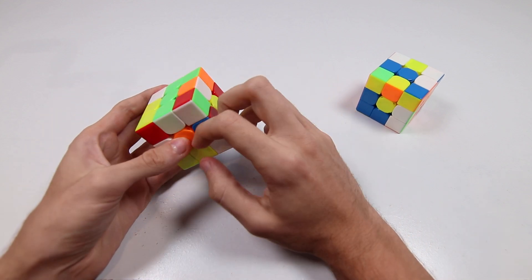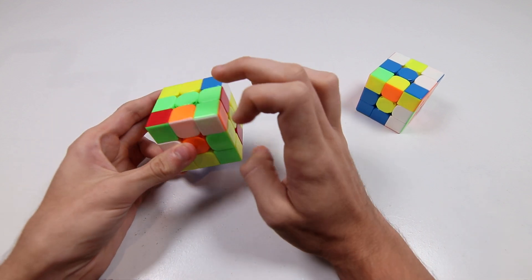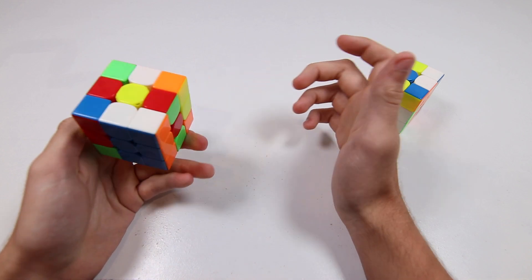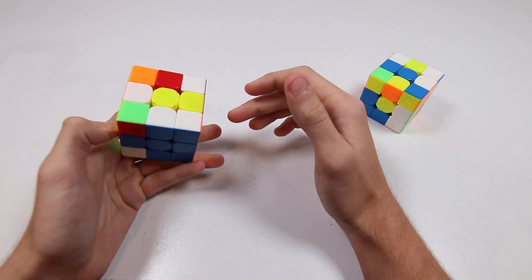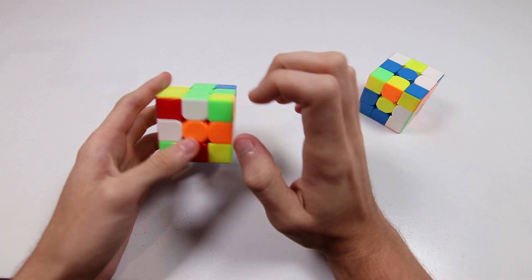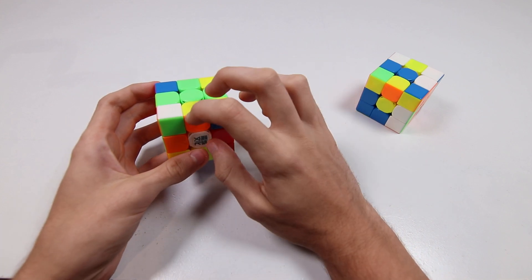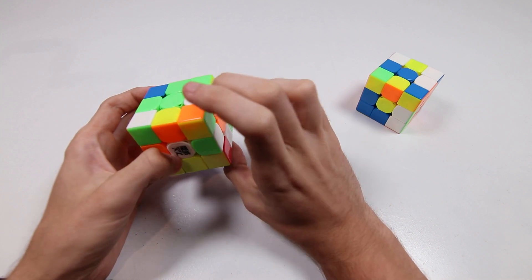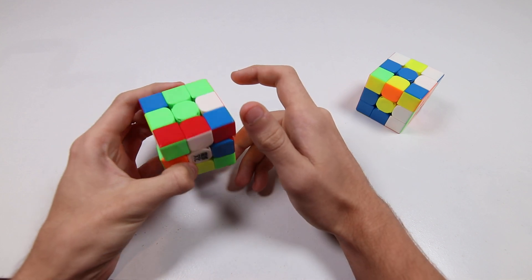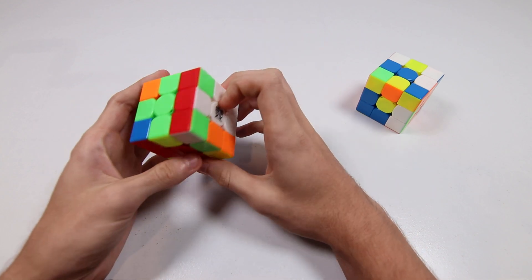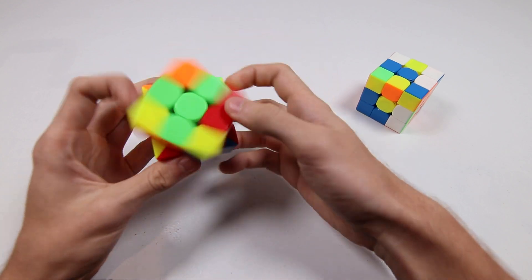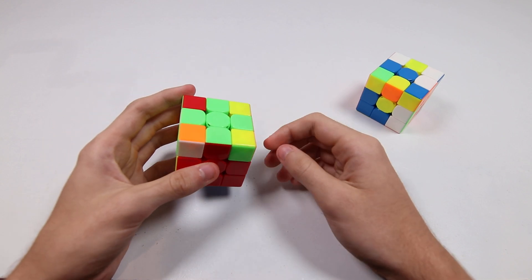But here we'll find we can do something like this to keep the edges in the U layer if we want, or we could just do this, and it's really not that bad either. And then all we've got to do to get an XX cross is just keyhole these orange edges in, and we can do that very easily. You can do this one, cancel into that one there, wide U2, and then you've got your last two pairs ready to go here, and then you can just do them, and then you're good to go.